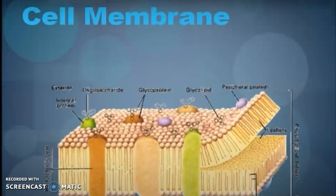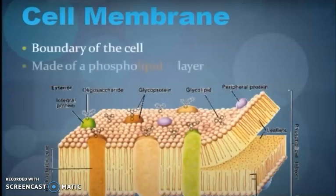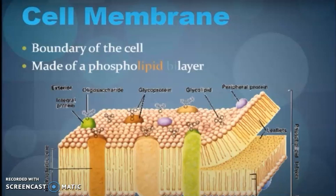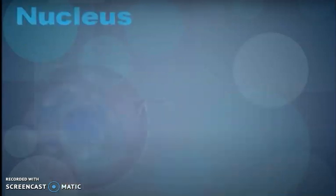This is the cell membrane structure. You can see there is a phospholipid bilayer, which forms the boundary of the cell. Some glycoproteins are also present here.